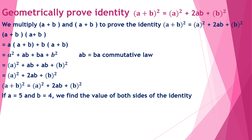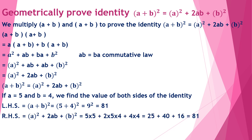Now let's verify this identity by substituting a = 5 and b = 4. The left-hand side: (5 + 4)² = 9² = 81. The right-hand side: 5² + 2×5×4 + 4² = 25 + 40 + 16 = 81. Since LHS equals RHS, we have verified the identity.